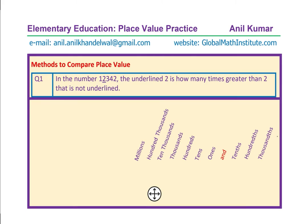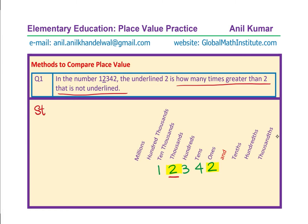Let us look at the first question: in the number 12,342, the underlined 2 is how many times greater than the 2 that is not underlined? So we write down this number: 12,342. The underlined number is the first 2 — the question is how many times greater it is than the 2 that is not underlined. So we are basically comparing these two 2s. I will tell you two strategies.